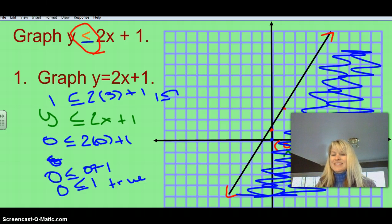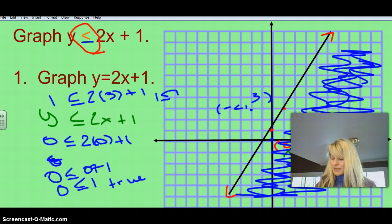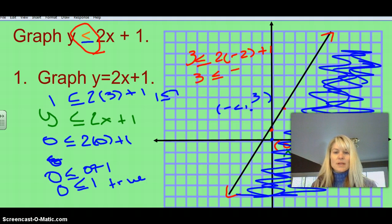And the reason I picked (0, 0) is just, it's easy math. If I picked a point on this side, let's say I pick negative 2, 3, and I plug that into that equation, I would put in 3 for y, less than or equal to 2 times negative 2 plus 1. So that would give me 3 is less than or equal to negative 4 plus 1, which gives me 3 is less than or equal to negative 3. Is 3 smaller than negative 3? No.